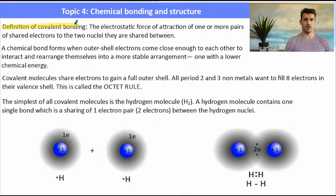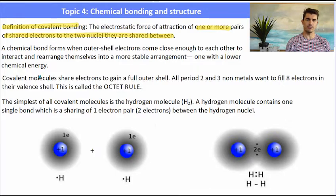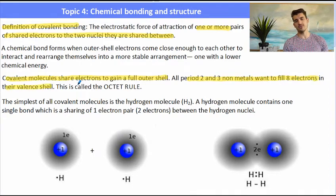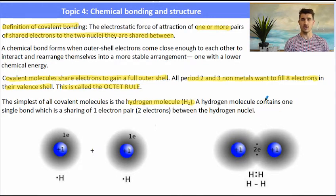The definition of covalent bonding is the electrostatic force of attraction of one or more pairs of shared electrons to the two nuclei they are shared between. A chemical bond forms when the outer shells come close enough for those orbitals to overlap. Covalent molecules share electrons to form a full outer shell, and all period two and three non-metals want to fill eight electrons in their valence shell — that's called the octet rule.